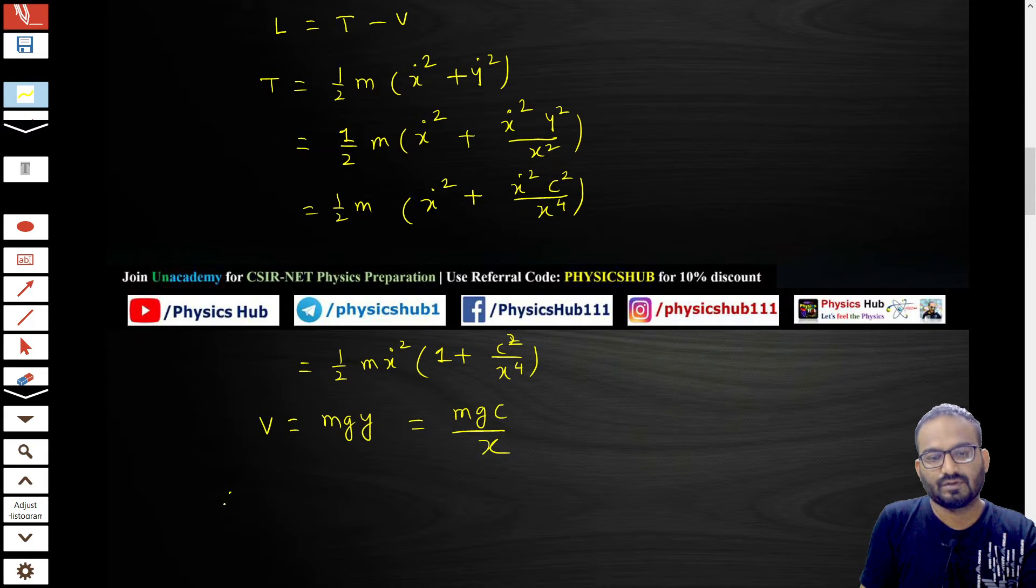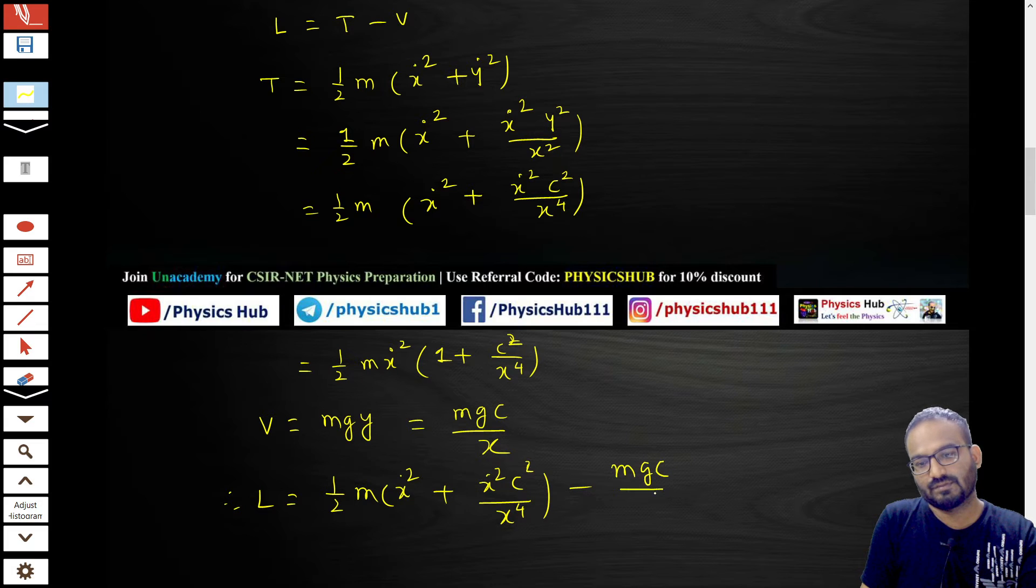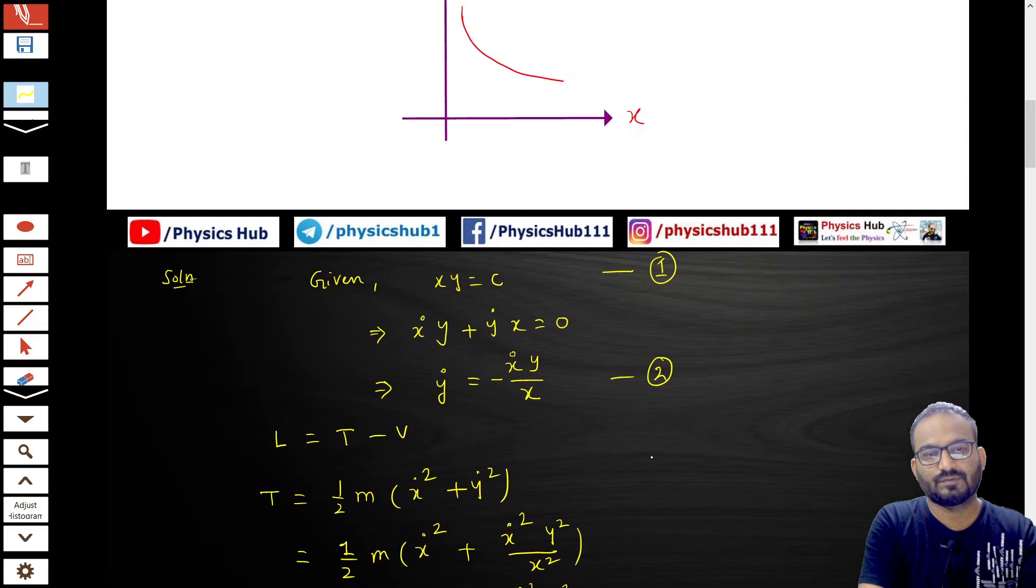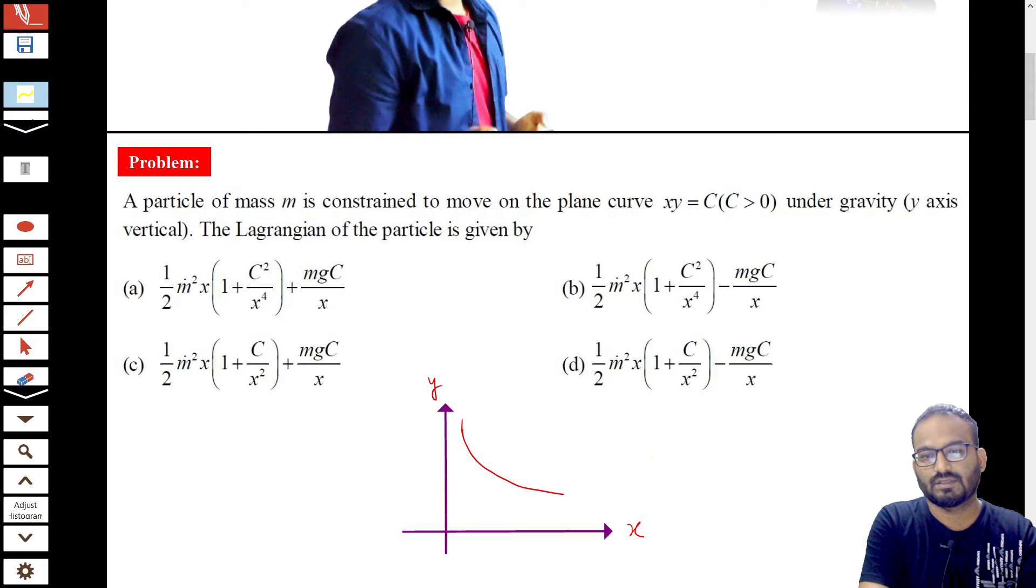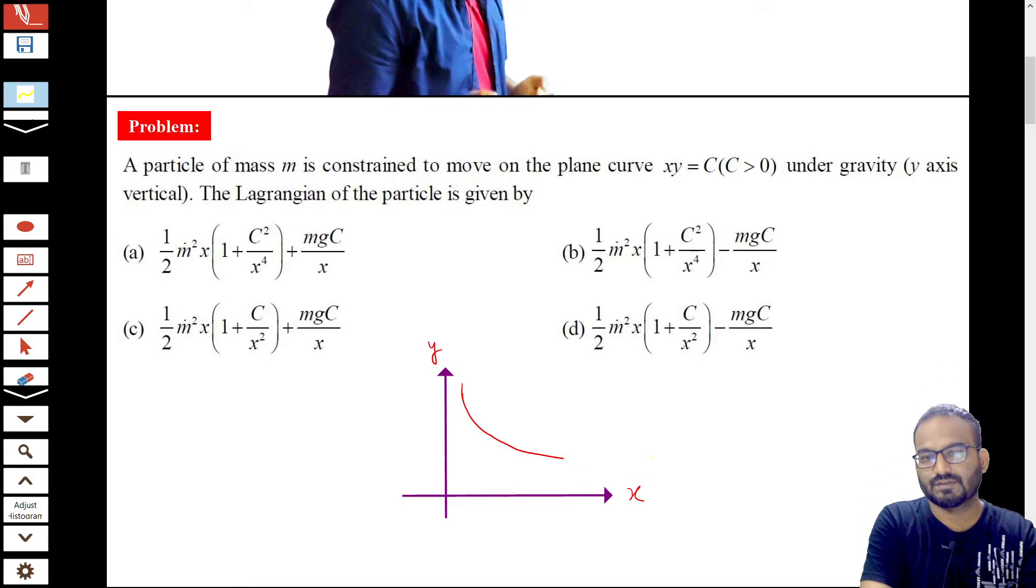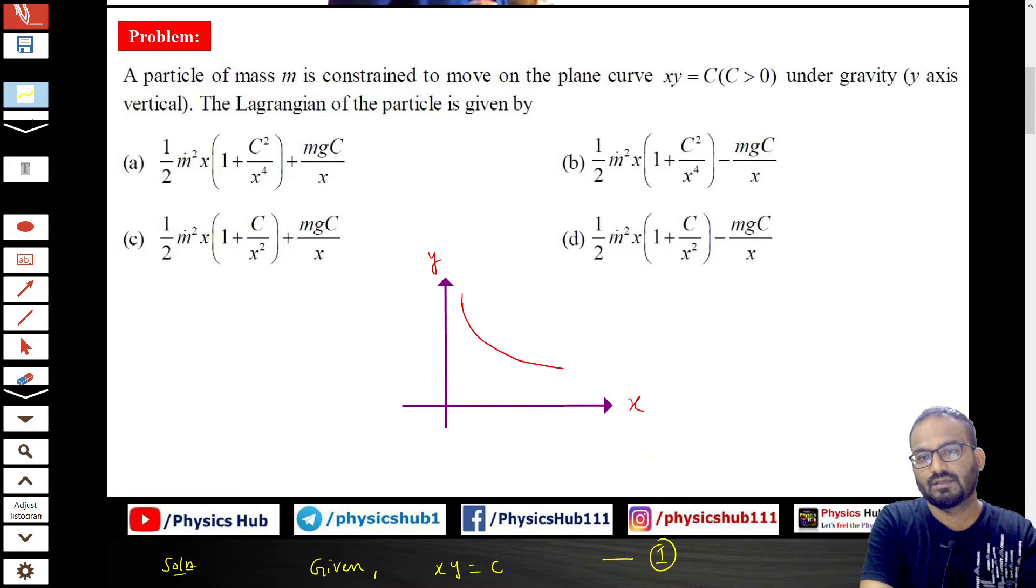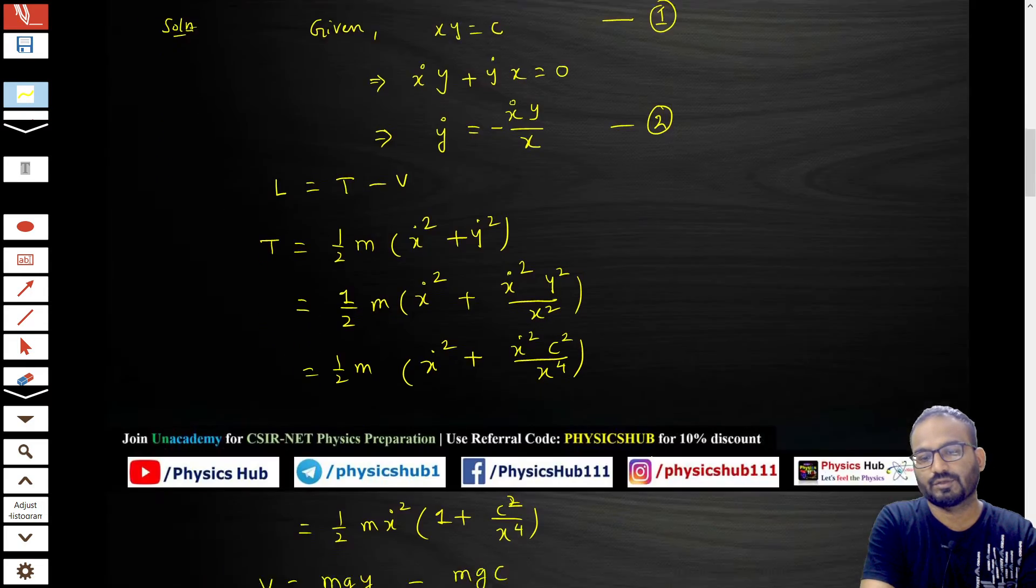So therefore our Lagrangian becomes half m·x-dot²(1 + c²/x⁴) - mgc/x. Let's see if any option is matching. I think option b is matching. Yes. Half m·x-dot, by printing mistake has come like that.